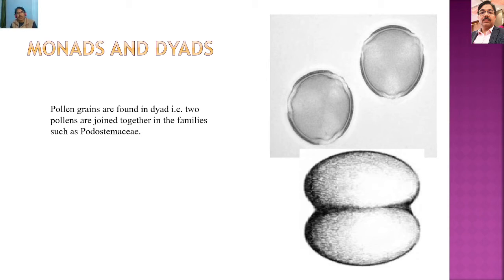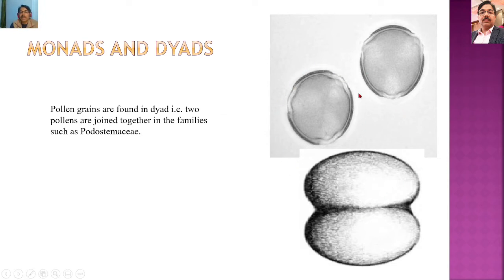Monads: after division of the pollen mother cell, each pollen unit gets separated from the others and each cell behaves as an independent pollen grain. As we can see in the diagram, there is a solitary cell — this cell is called a monad.